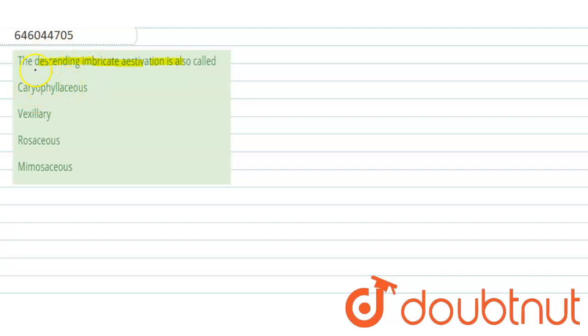Now if we talk about the first option, that is caryophyllaceous. Caryophyllaceous is a condition of the corolla which consists of five free petals with comparatively long claws. So this option will be incorrect here.